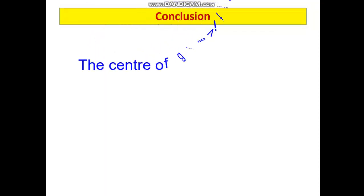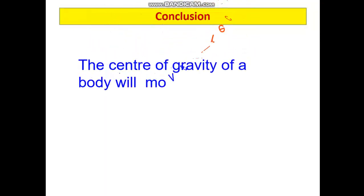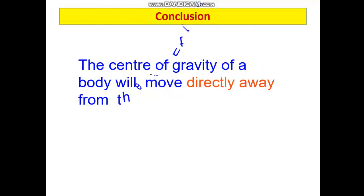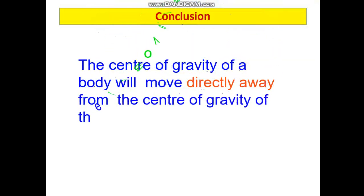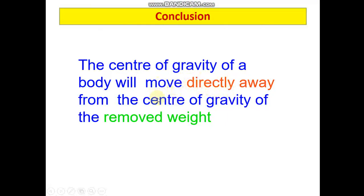The basic conclusion from this discussion is: the center of gravity of a ship will move directly away from the center of gravity of the removed weight. The opposite is also true — if you are adding a mass, the center of gravity will move directly towards the center of gravity of the added object. This is the fundamental idea we need to keep in mind, and using this we will work out some numericals to help understand this section better.